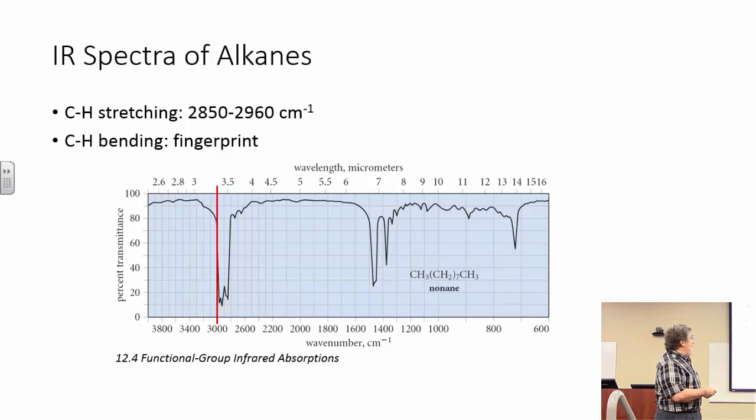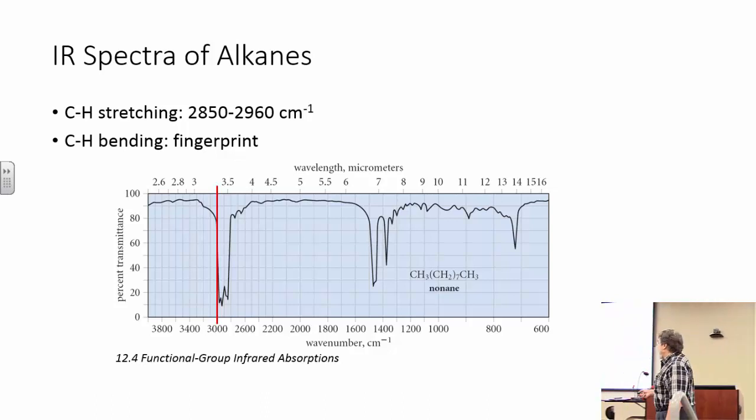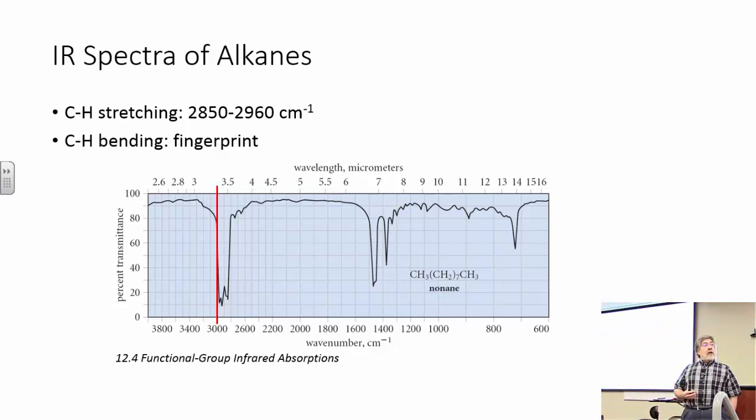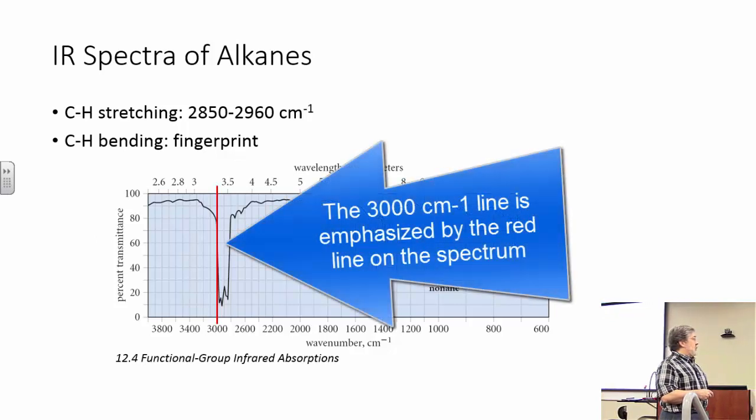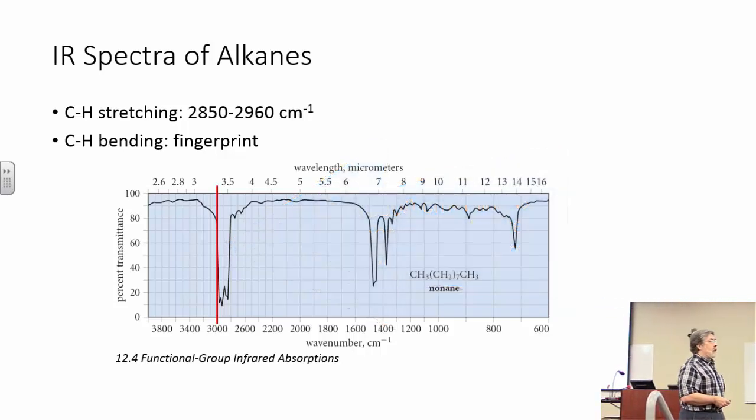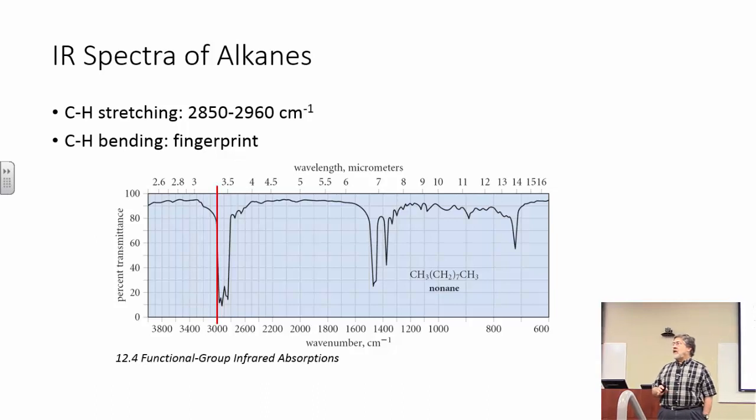So here is an IR spectrum. It is for no name, and it comes out of your textbook except for the red line, the red line I added. I added the red line with a purpose. When it comes to interpreting an infrared spectrum that you're seeing for the first time, there are a couple places in particular where you ought to look first, because that can tell you a lot about the molecule that produced that spectrum. The 3000 line is one of those places. What's so important about the 3000 line?